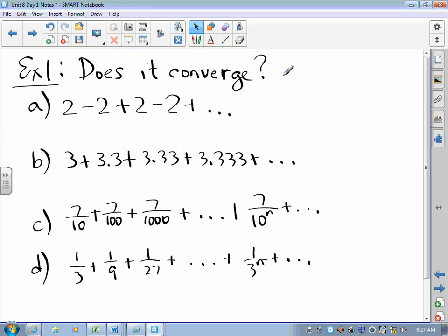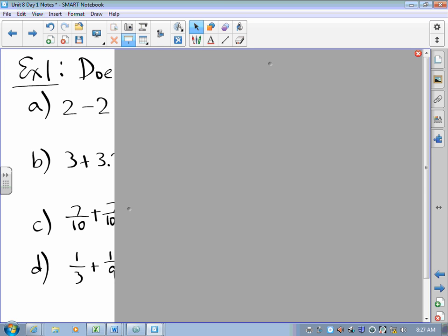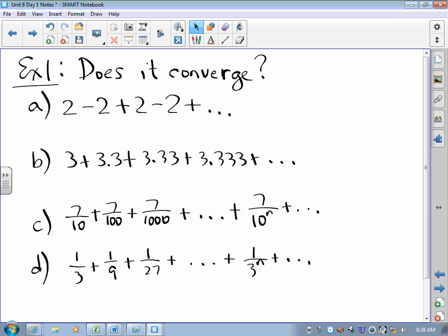And the question each time is, does it converge? That is to say, if I take the sum of the first number, and the first couple, and the first three, and the first four, and I look at those sums as things get larger, do I approach a number? So, I take a look at the sum.